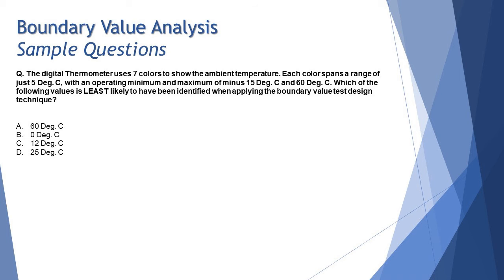The question here is from boundary value analysis and it says the digital thermometer uses seven colors to show the ambient temperature. Each color spans over a range of just five degrees. That means each range is limited to just five degrees and the moment you move ahead with the next set of degrees, that is another five, you have a different color being represented.